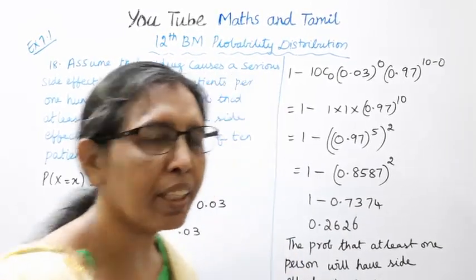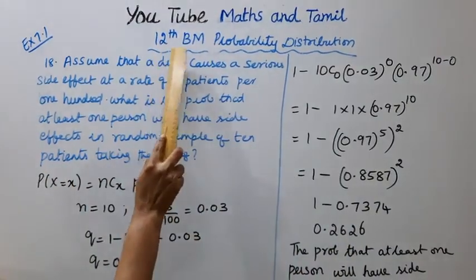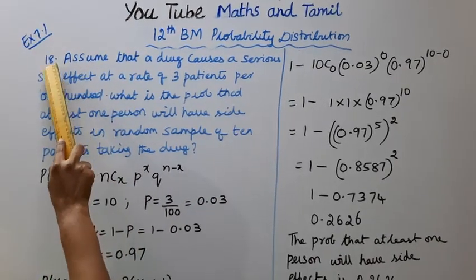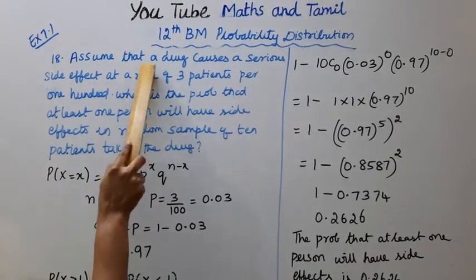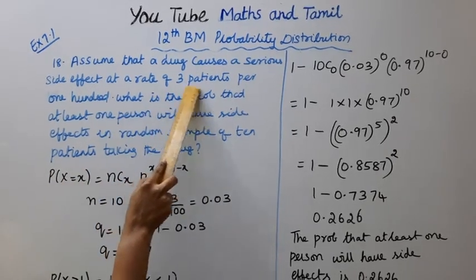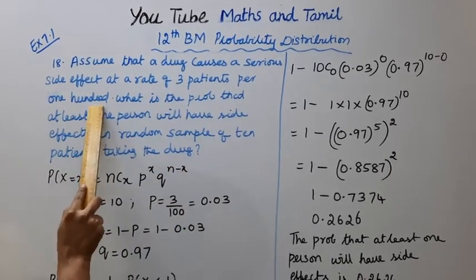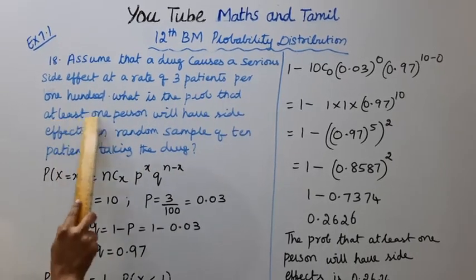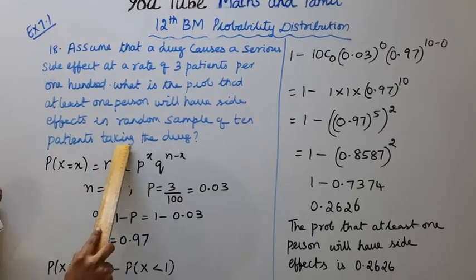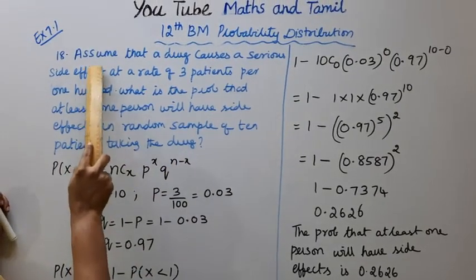Hello students, welcome to Maths and Tamil channel. 12th standard business maths probability distribution, exercise 7.1, problem 18. Assume that a drug causes a serious side effect at a rate of 3 patients per 100. What is the probability that at least one person will have side effects in a random sample of 10 patients taking that drug?